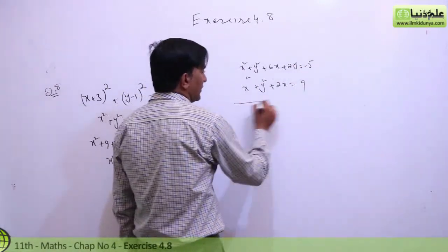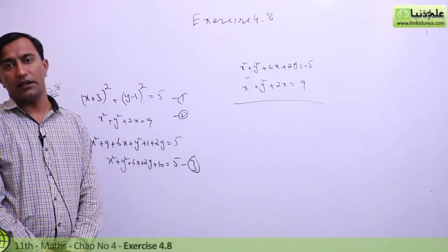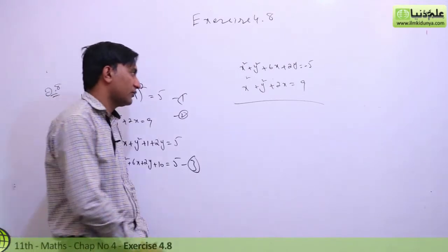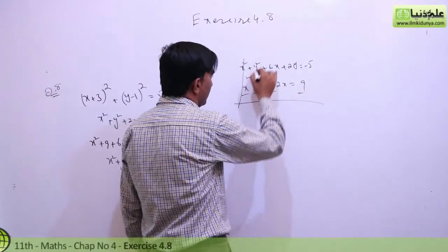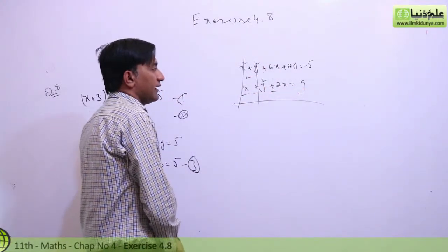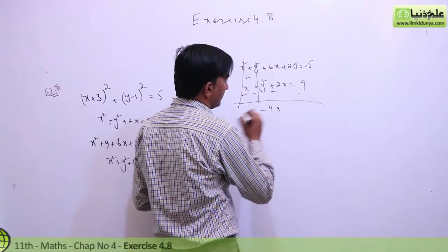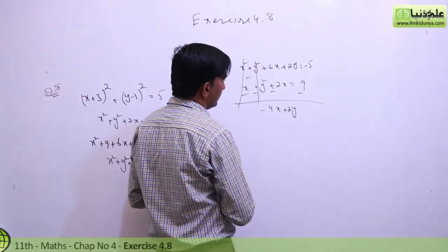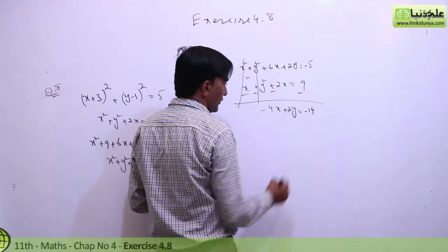Now I will simplify to find a linear equation. Taking minus, the x square and y square terms cancel. So 6x minus 2x gives minus 4x, plus 2y, equal to minus 9 minus 5, equal to minus 14.